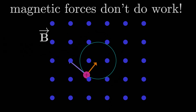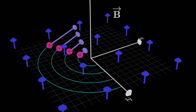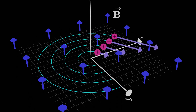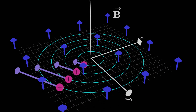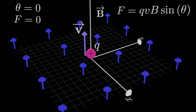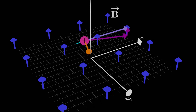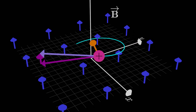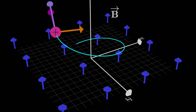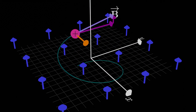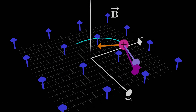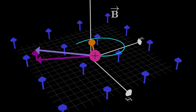So, in summary: a uniform magnetic field results in centripetal motion if a charged particle has a velocity perpendicular to the field; it results in constant velocity if the particle's velocity is parallel or anti-parallel to the magnetic field; and it results in helical motion if the charged particle has a velocity that's neither perpendicular nor parallel to the magnetic field. And that's all there is to it.